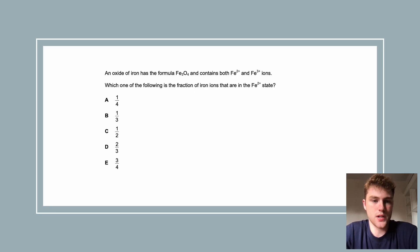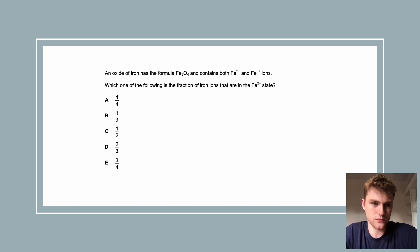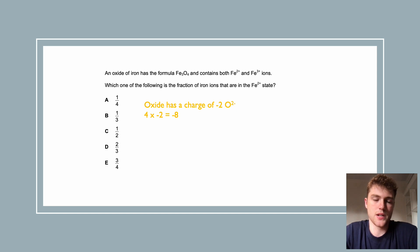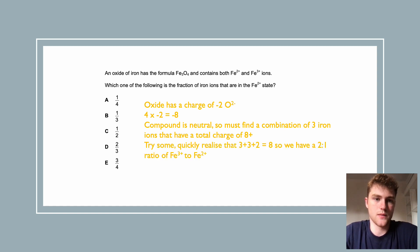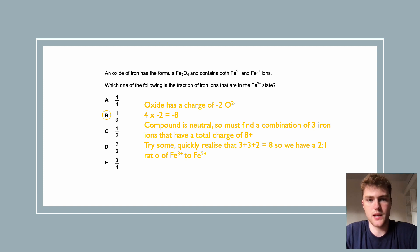Here's a chemistry example. An oxide of iron has the formula Fe₃O₄ and contains both Fe²⁺ and Fe³⁺ ions. What fraction of the iron ions are in the Fe²⁺ state? The oxide ion has charge −2, so four oxygens give −8. We need three iron ions with a combined charge of +8. The combination 3+ + 3+ + 2+ = 8, giving two Fe³⁺ and one Fe²⁺, so one third of the iron ions are in the Fe²⁺ state.